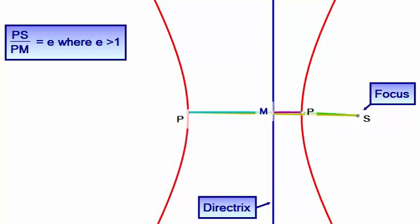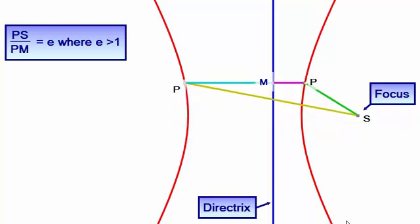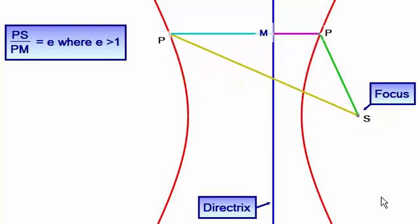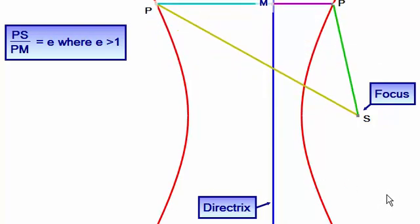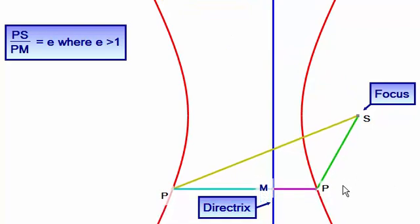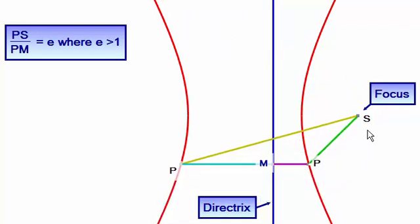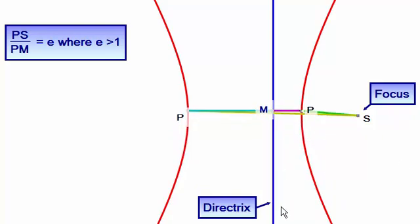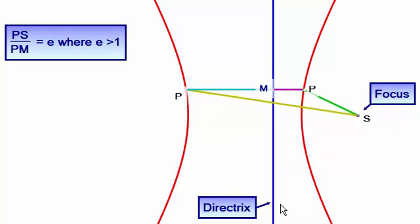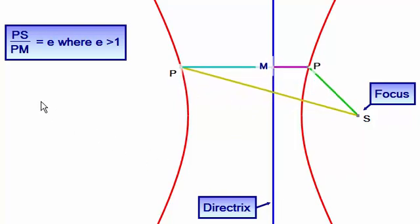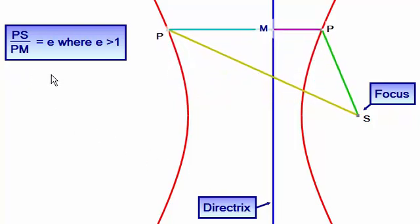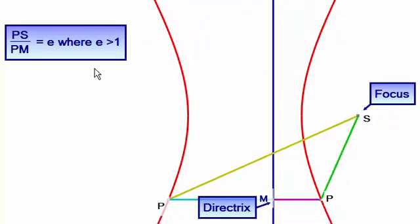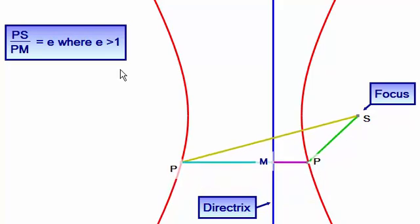But before we start, the hyperbola that's given by this curve here that you see in red is defined as the locus of a point P that moves in such a way that when you compare the distance P to a fixed point S called the focus to that of P to a fixed straight line called the directrix, when you compare those distances PS to PM it's a constant value. We call it E and it stands for the eccentricity, where for a hyperbola E is always greater than 1.